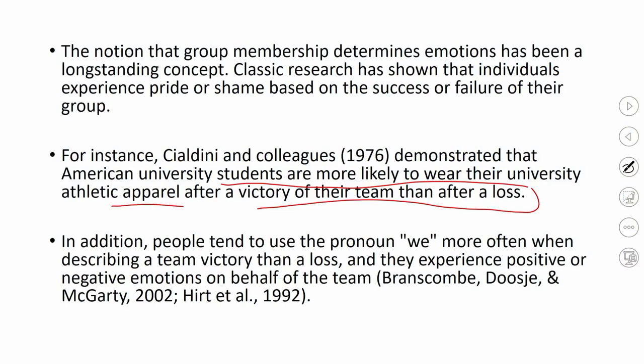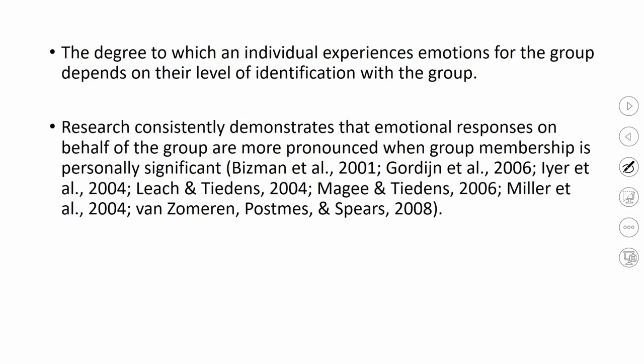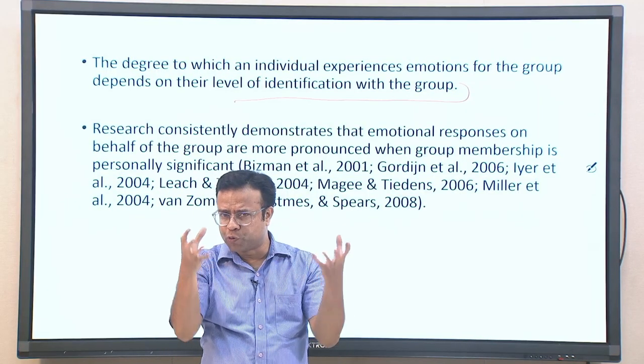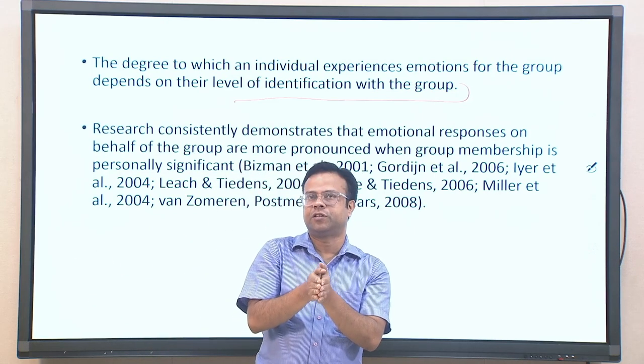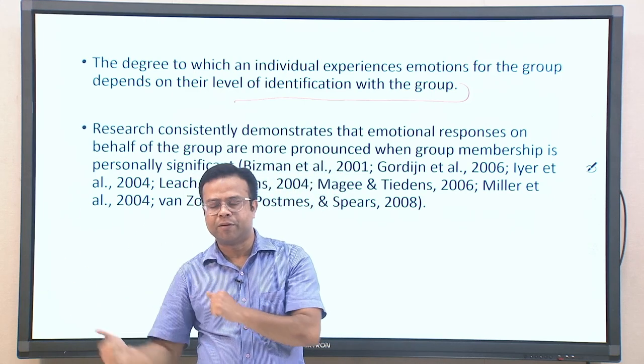Collective identity becomes much stronger when something positive happens. The degree to which an individual experiences emotions for the group depends on the level of identification — not everybody will equally experience emotion on behalf of the group. The stronger the identification, the stronger the emotions on behalf of the group. If you are very strongly attached to your cultural group, whatever happens in that group will strongly influence you as an individual. On the other hand, a person not strongly identified with a cultural group may find their sense of belongingness elsewhere, making the impact more superficial.